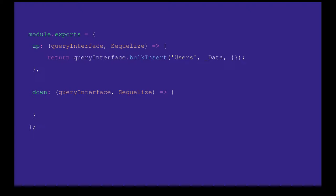When we write migrations there is also a seeder. A seeder is actually used to seed the data and the syntax looks the same — we have up and down. In the up we actually add data to the system using bulk insert. Here we will use bulk insert, bulk update, and all these utilities on the query interface object to insert bulk data from a JSON object.